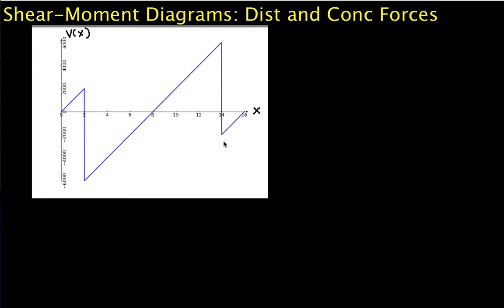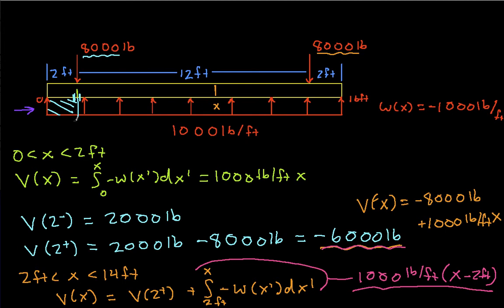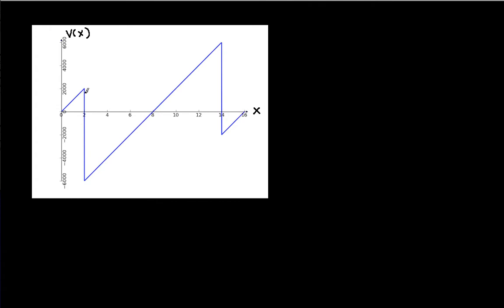In part one, we found the shear diagram for the beam that we had a distributed force upwards and then we had two concentrated forces downwards, one at 2 feet of 8,000 pounds and one at 14 feet of 8,000 pounds. We found in that situation that this is what the shear force diagram looks like.